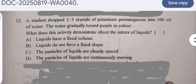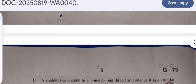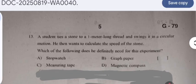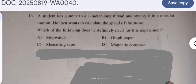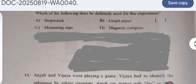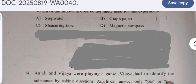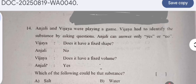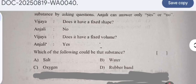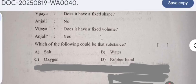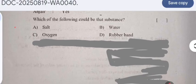Question 13: A student ties a stone to a one meter long thread and swings it in a circular motion. He wants to calculate the speed of the stone. Which of the following does he definitely need for the experiment? Question 14: Anjali and Vijaya were playing a game where Vijaya had to identify a substance by asking questions that Anjali can answer only yes or no. Which of the following could be the substance: salt water, oxygen, or rubber band?